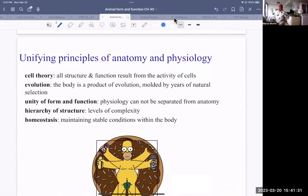Let's look at unifying principles of anatomy and physiology. Now we're looking at animal anatomy and physiology. One unifying principle is cell theory. For us, that's, of course, for all life forms. Cell theory: all structure and function result from the activity of cells. It all goes down to the cellular level. Another unifying principle is evolution. The animal body, as with all living things, is a product of evolution molded by years of natural selection.